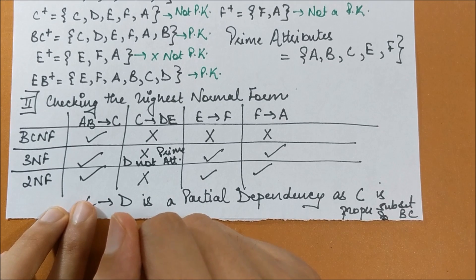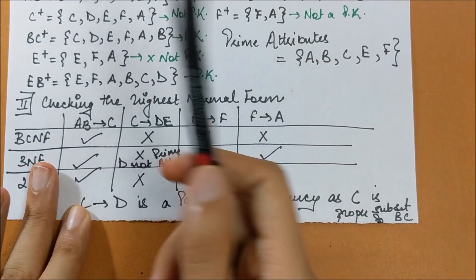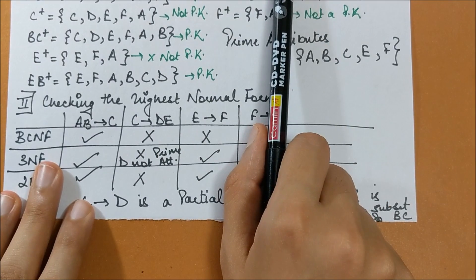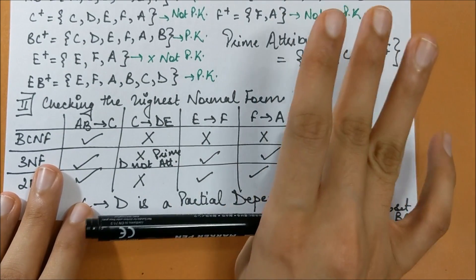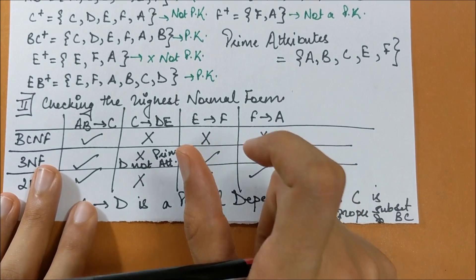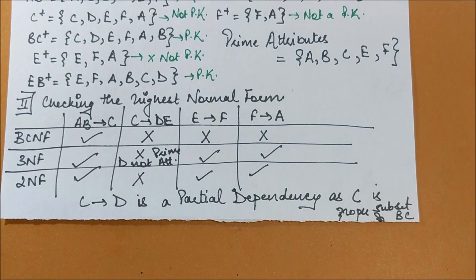So the highest normal form of this relational schema is 1NF. Since no values are explicitly provided in this example, we assume all attribute values are atomic with no multi-valued attributes. Therefore, the relational schema satisfies 1NF as its highest normal form.